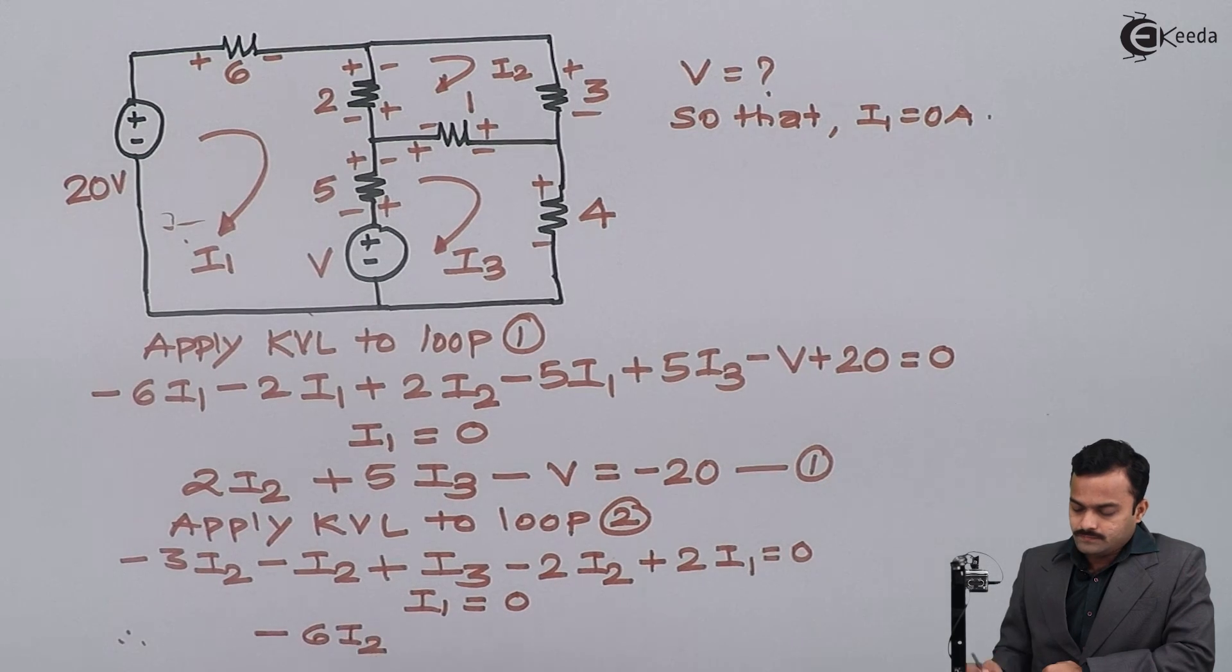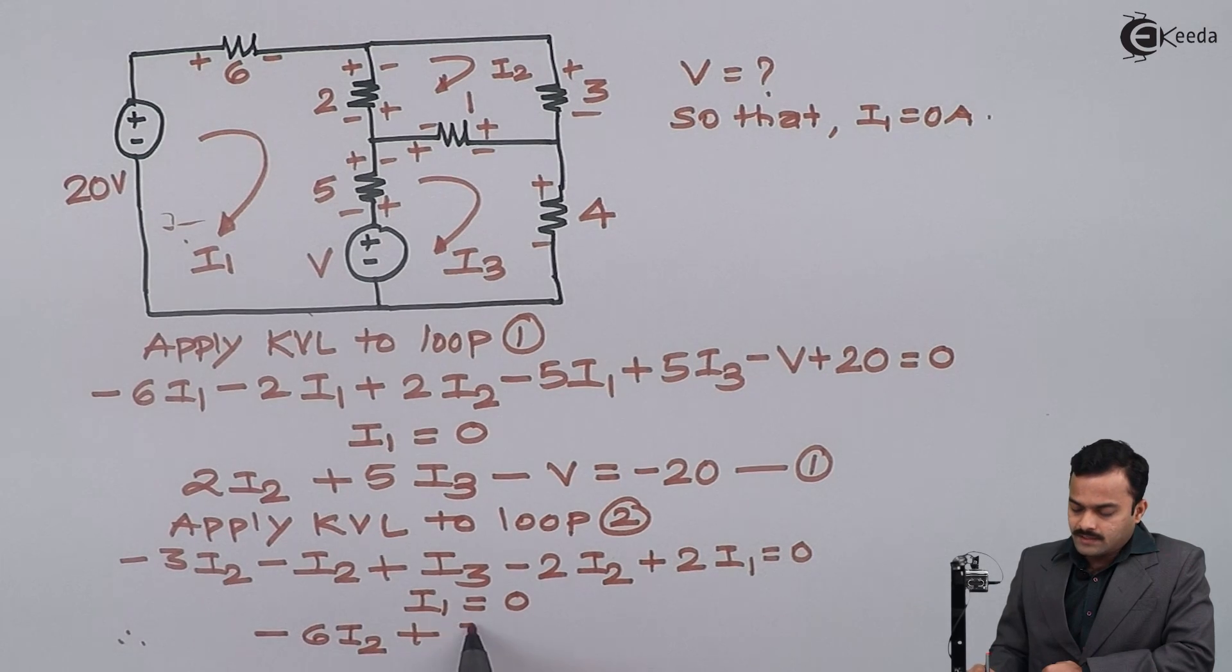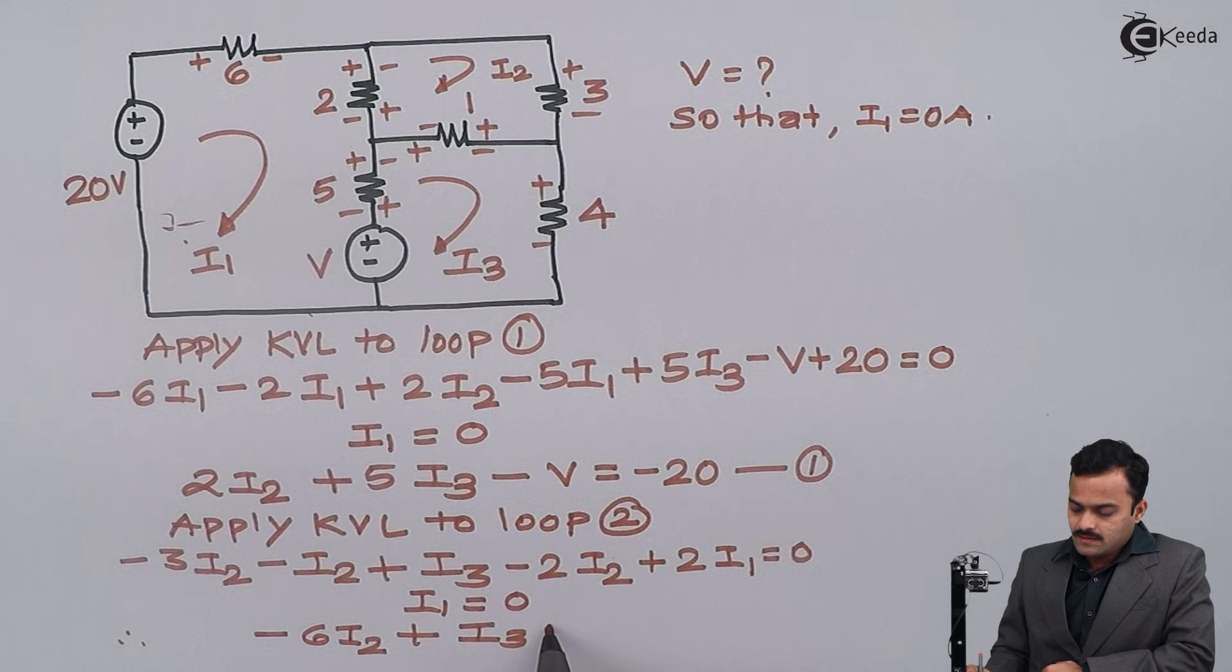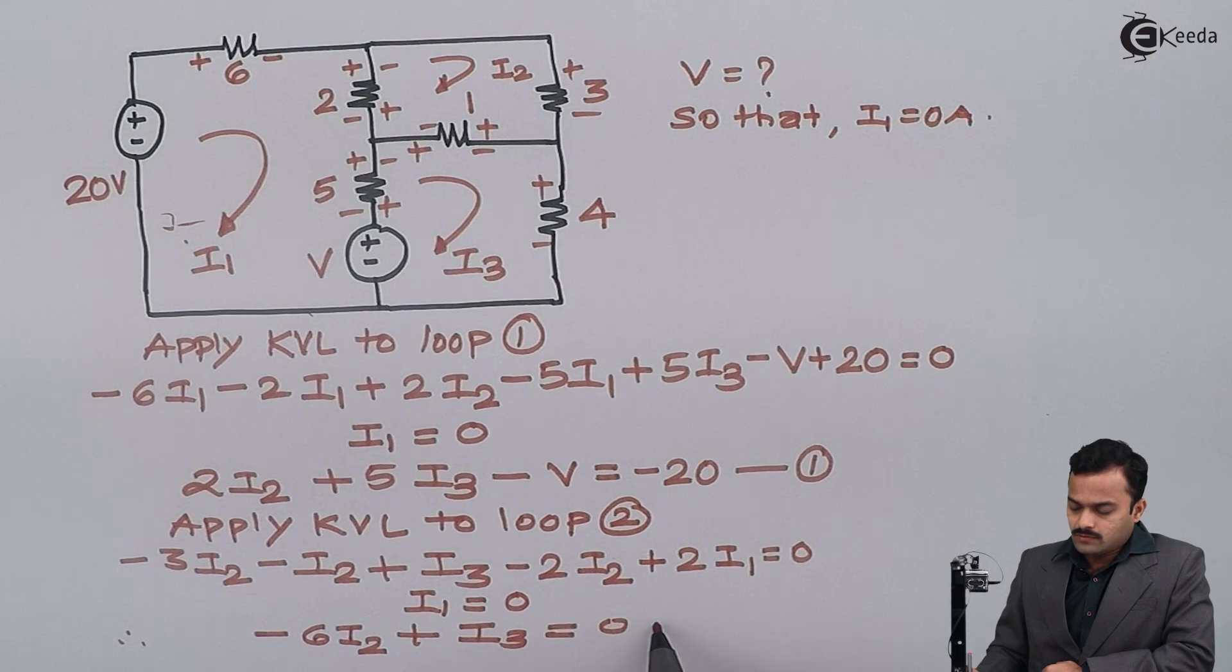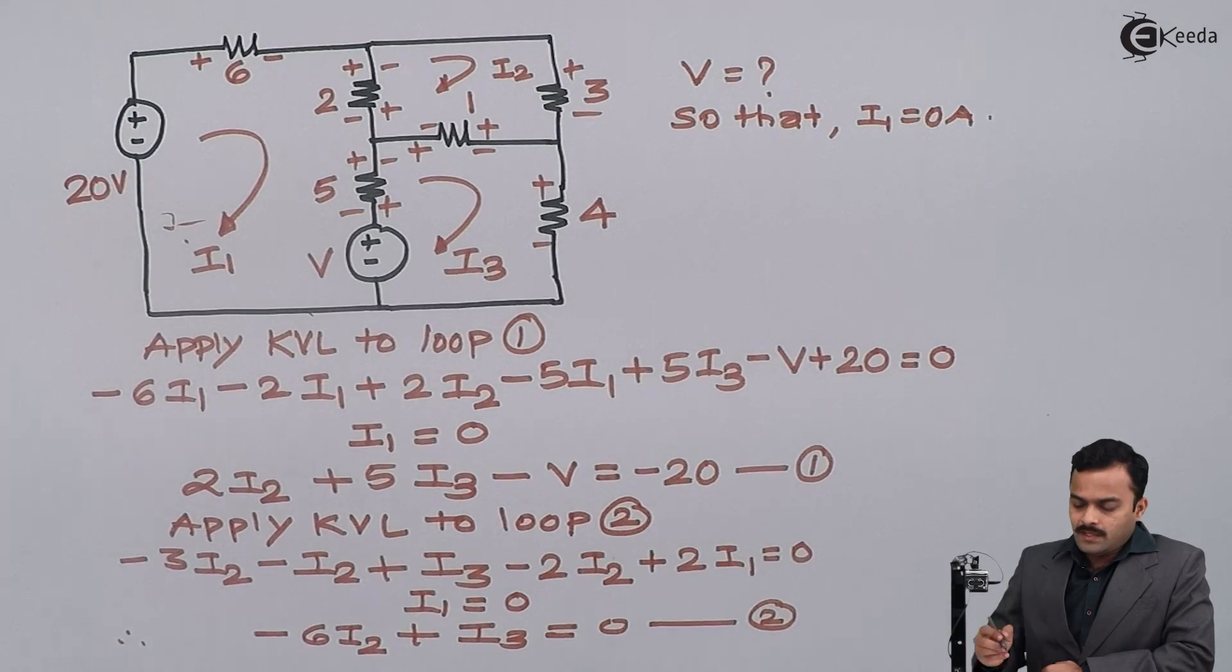minus 6I2. I3 will remain as it is, equal to 0. This will be equation number 2. Similarly,